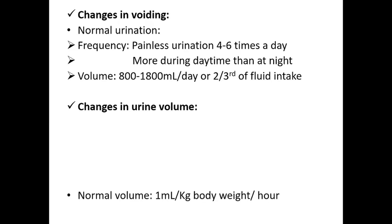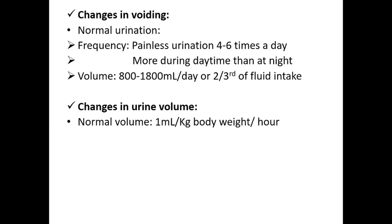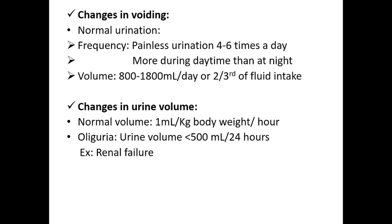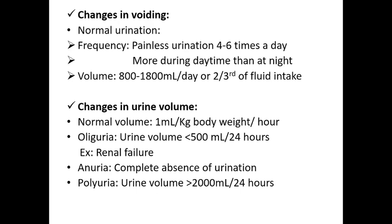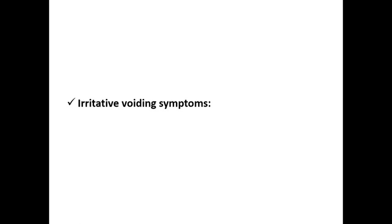Changes in urine volume: if the urine output is less than 500 ml per 24 hours, that is called oliguria, which is suggestive of kidney diseases, especially renal failure. If there is no urine excretion at all, the condition is called anuria — that is complete absence of urination. If the person passes more than 2 liters of urine per 24 hours, that is called polyuria, which could be due to conditions like diabetes insipidus. You have to inquire the patient about his voiding pattern, urine output, and frequency of urination.